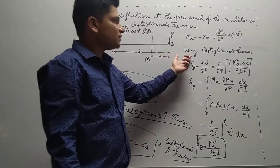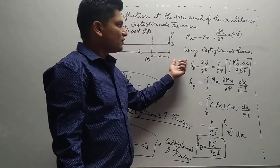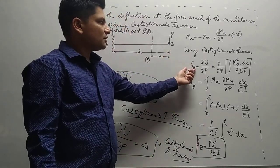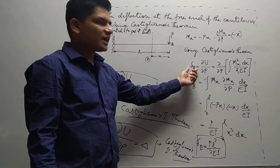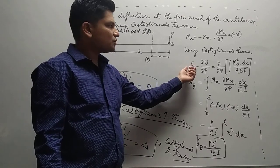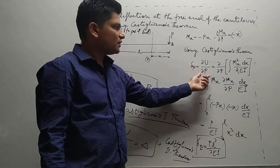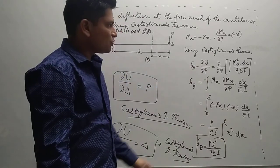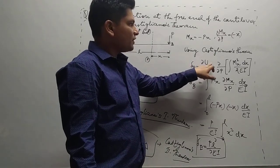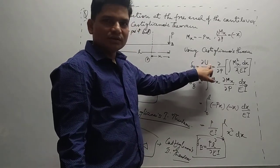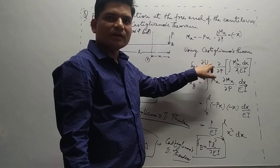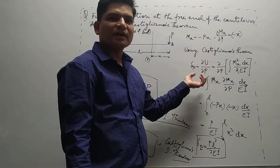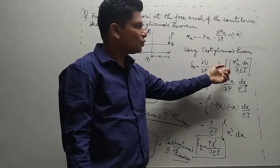Now by using Castigliano's theorem, we need to find the deflection at point B. From Castigliano's theorem, δU/δP gives us the deflection. We put the value of strain energy here. The strain energy stored in any member is given by the integration of Mx² dx upon 2EI.